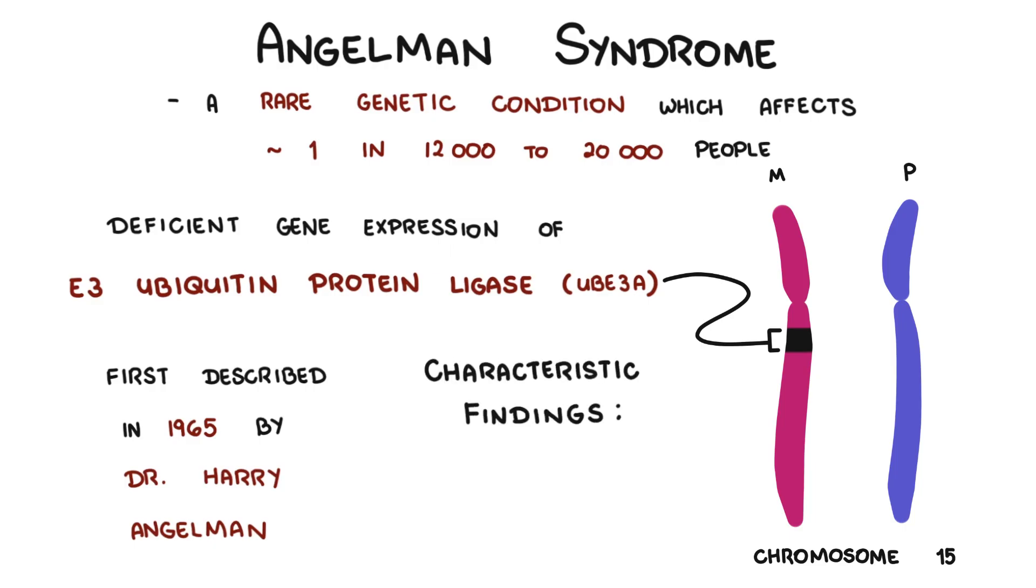Characteristic findings of Angelman syndrome include severe developmental delay and movement or balance disorder, usually in the form of gait ataxia and tremulous movement of limbs.